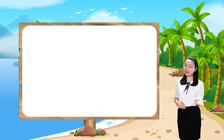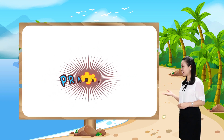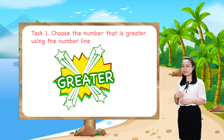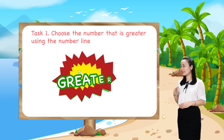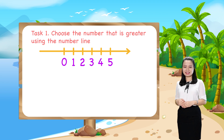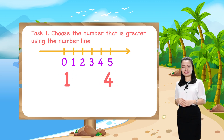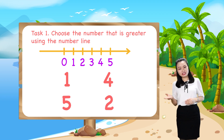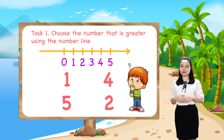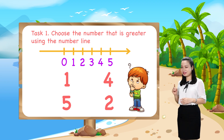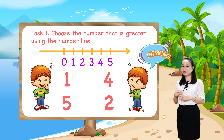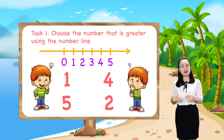Now let's have some practice. Task 1: choose the number that is greater using the number line. The pairs are: 1 and 4, and 5 and 2. Try to think about the answers by yourself. Pause this video while you are thinking. When you finish, replay the video to check the answers with me.